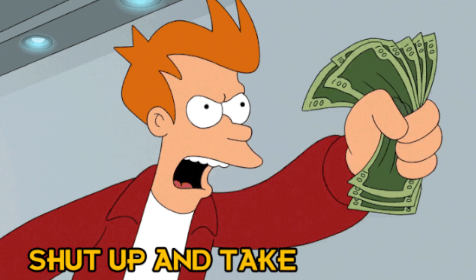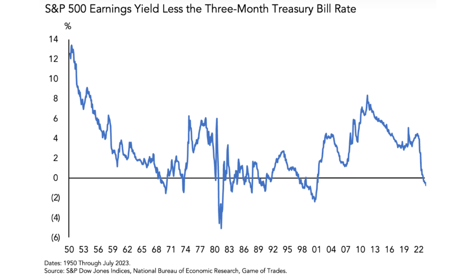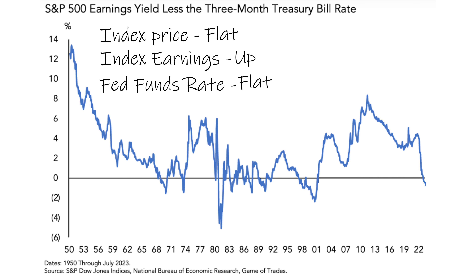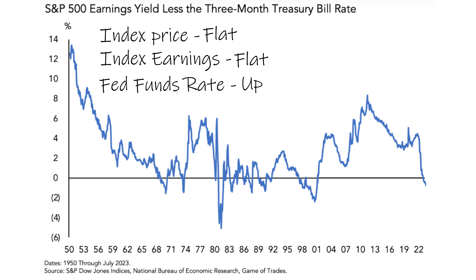To understand the chart a bit better, there are three main inputs: the yield on the T-bill, which is a proxy for the federal funds rate; the price of the index; and the earnings on the index. An increase in stock price while the funds rate and earnings remain flat will cause the line to go down. An increase in earnings while price and funds rate are flat will cause the line to go up. And an increase in the funds rate while price and earnings remain flat will also cause the line to go down.